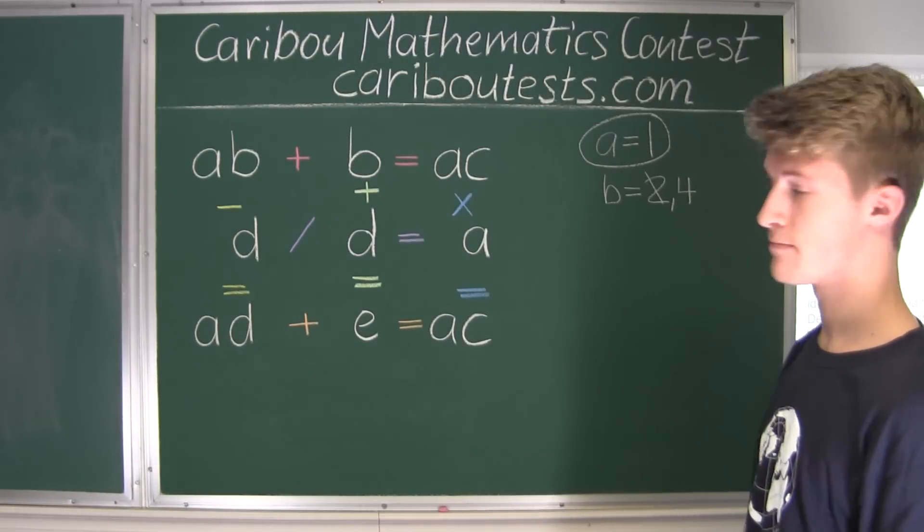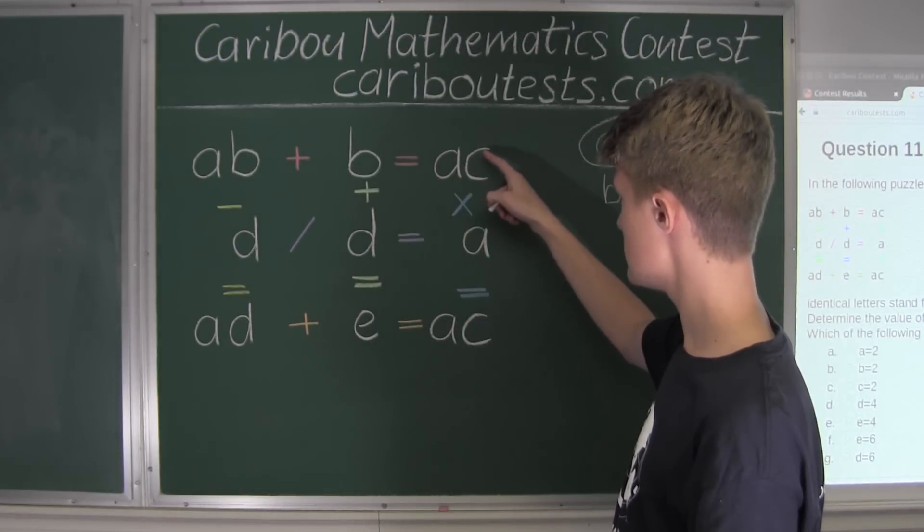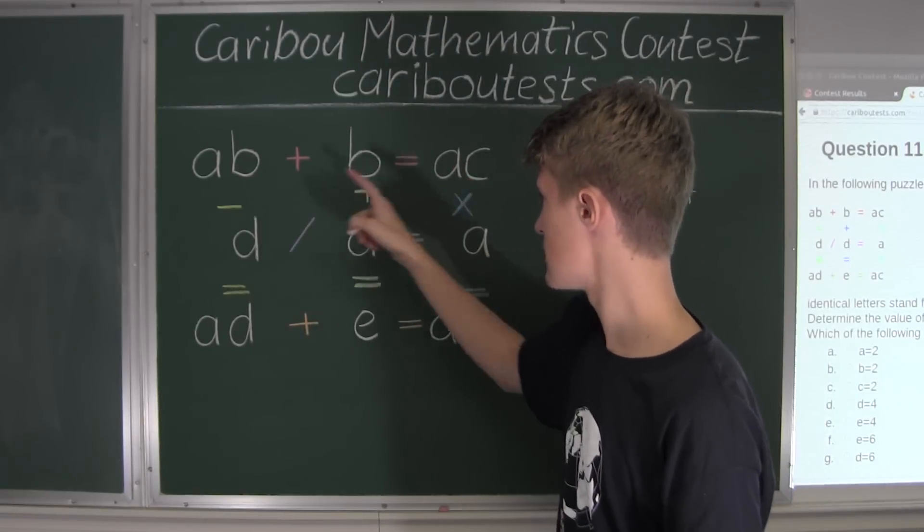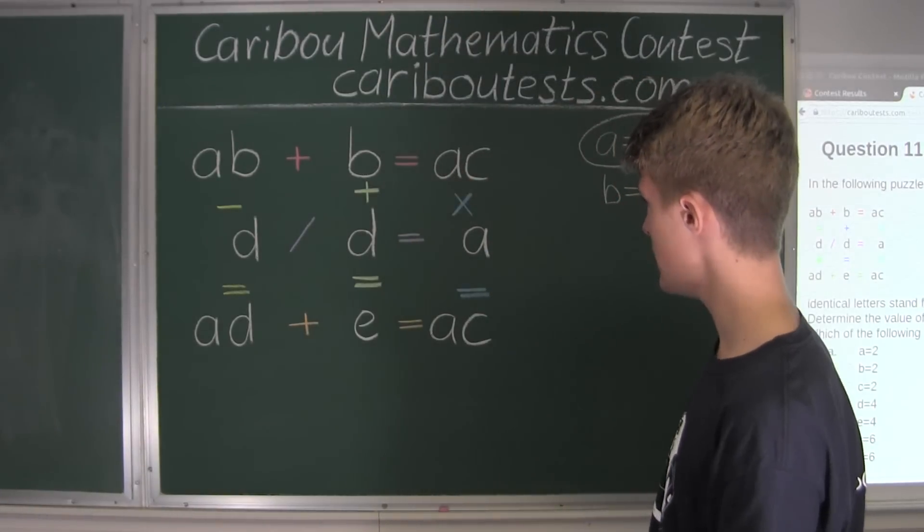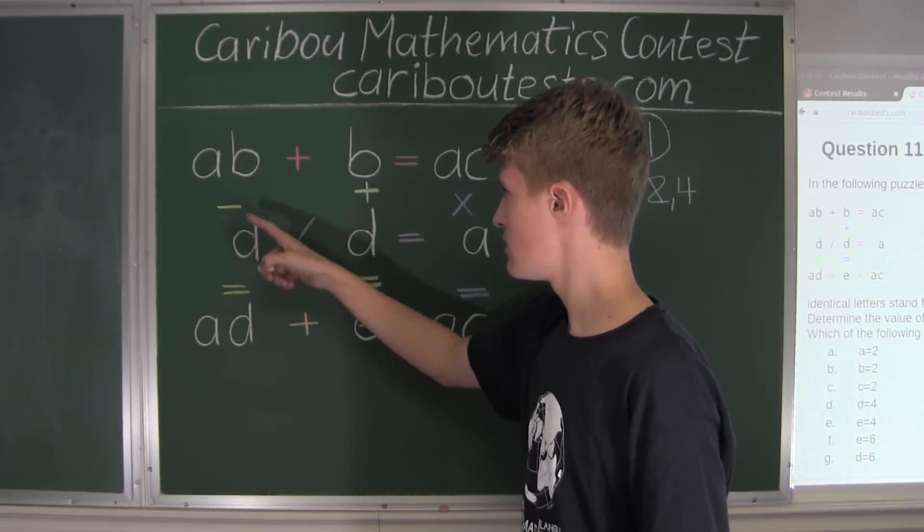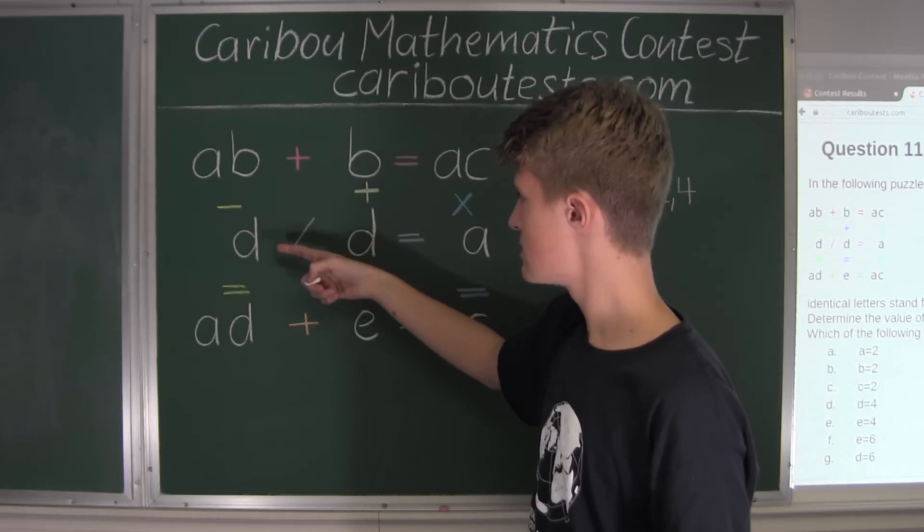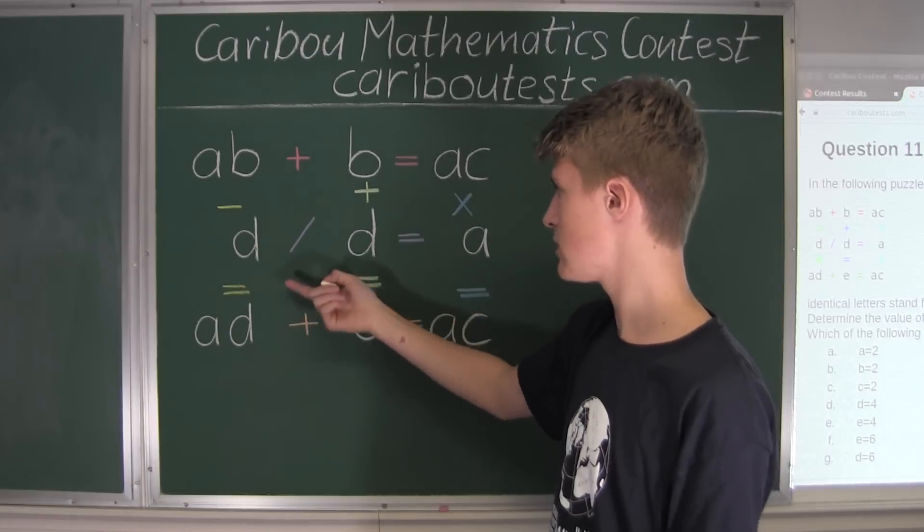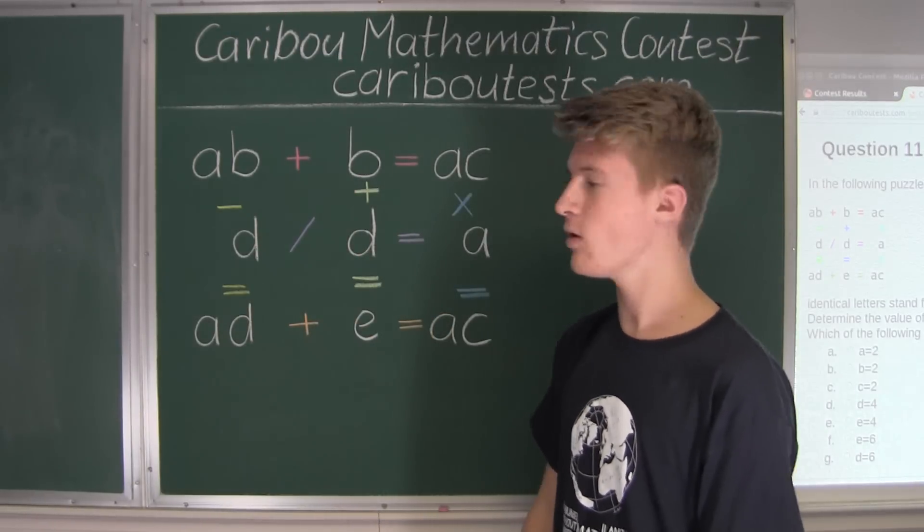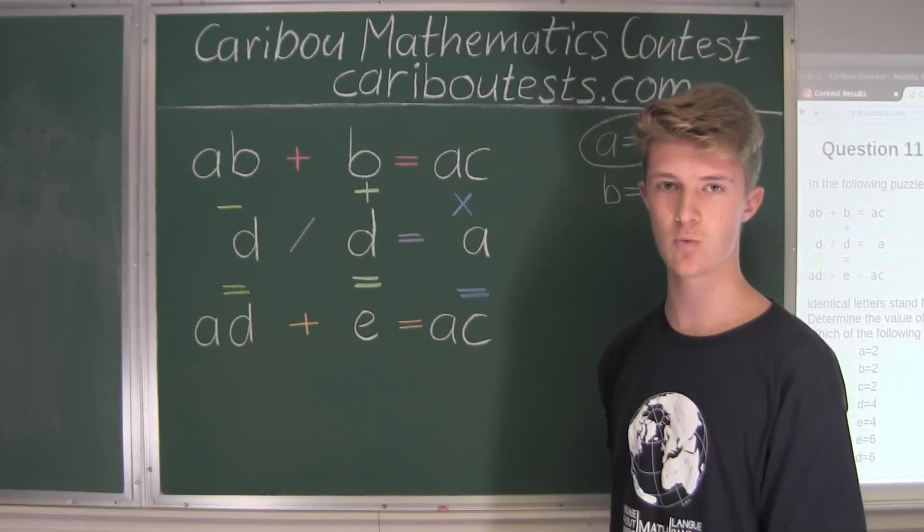So we have 14 plus 4 is equal to 18. So that already works, right, because the A still stays 1. So C would equal to 8. And here we would have 14 minus, well, again, forgetting about the A's, we would have 4 minus D is D. D would have to equal 2. So that would also work. Well, we know that B equals 4 could work. We don't know about the rest, but for now it could work.